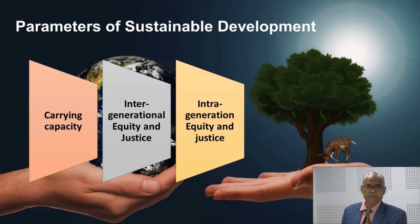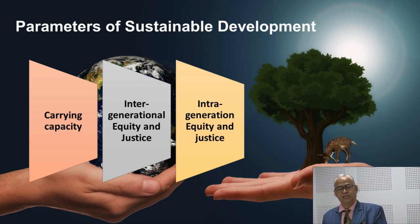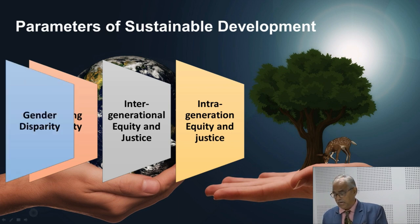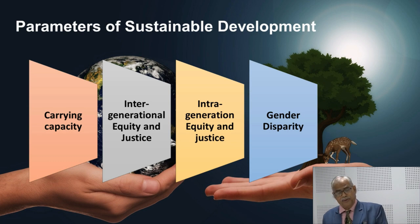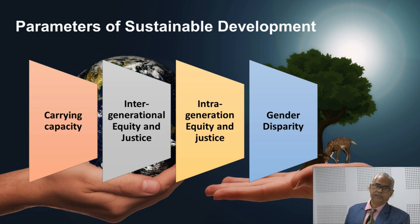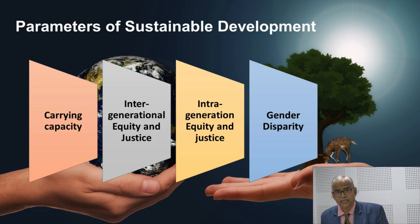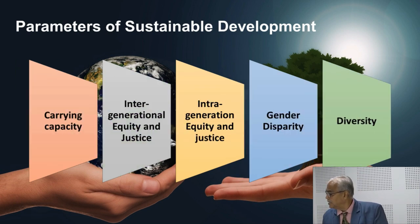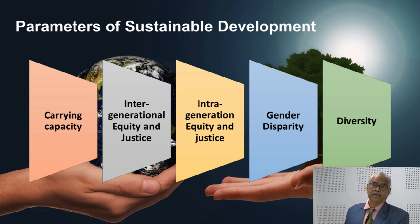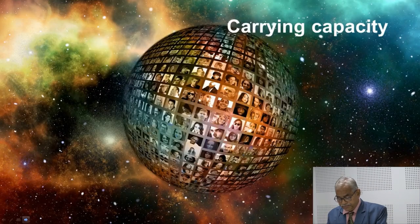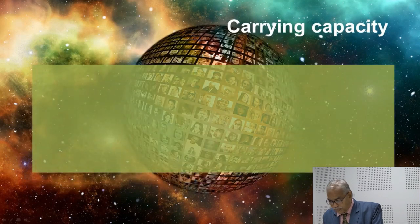The third parameter is intra-generational equity and justice — at one particular moment in time, there are inequities and injustices across different parts of the earth. Gender disparity is also a parameter — we are talking about equity and equality, which is not possible without abolishing discriminatory approaches based on gender. The last parameter is plurality and diversity — the differences and variations that exist in the world among men, women, cultures, life systems, and environmental systems.